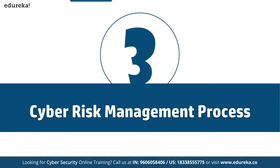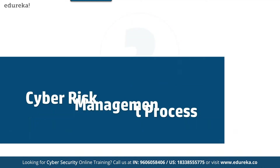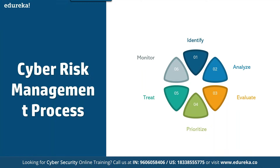The cyber risk management process is divided into six phases, like a life cycle. The first phase is Identify — identify the risks that might compromise your cybersecurity. The second is Analyze — analyze the severity of the risk by assessing its occurrence and impact. The third is Evaluate — evaluate whether the risk is within an acceptable level or not.